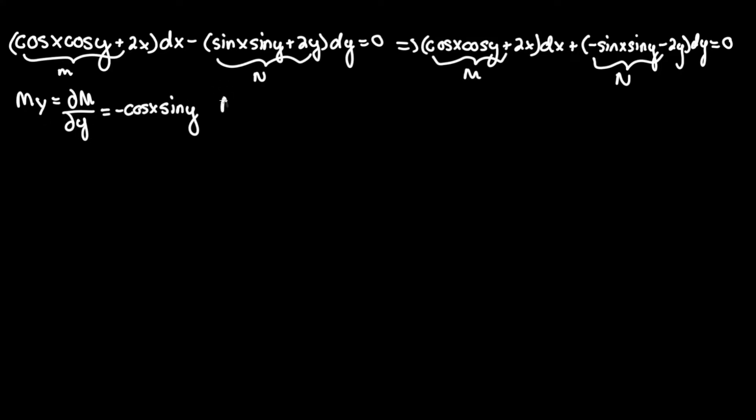And now let's do the partial derivative of N with respect to x, the other variable, which is equivalent to del N del x. And this equals, this time the sine y is a constant as well as the negative sign, so let's bring that out: negative sine y.